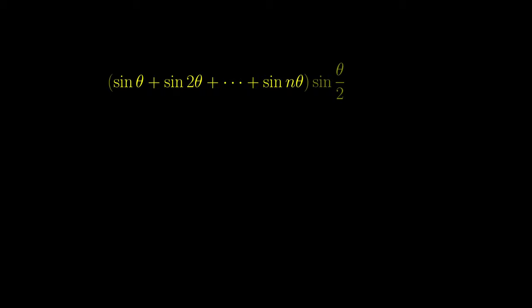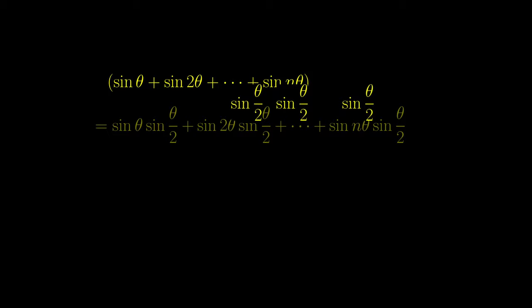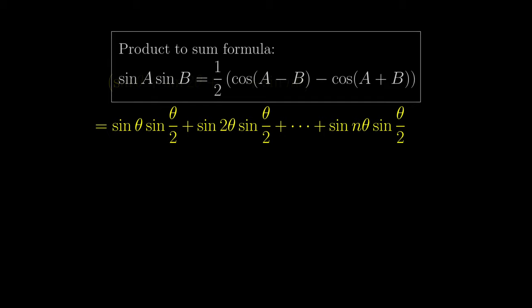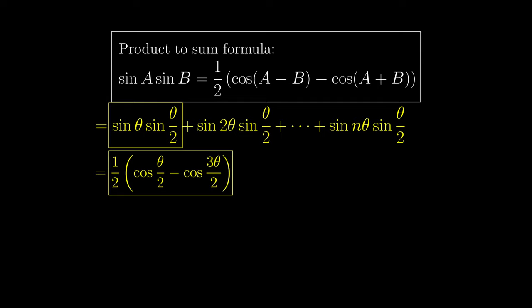For the algebraic method, the easiest method is to multiply the entire expression by sin θ over 2, then distribute sin θ over 2 to all the terms. Now we can use the product-to-sum formula in trigonometry.